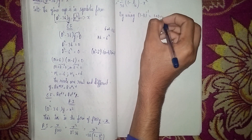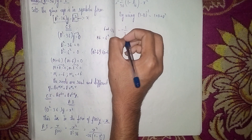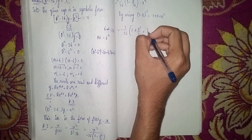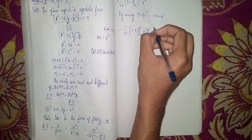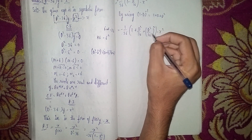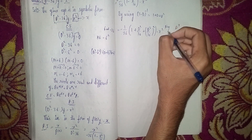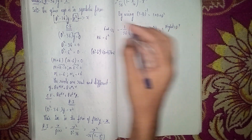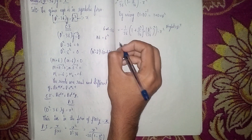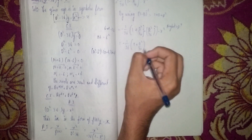We take the expansion up to D² only, since the RHS is x² (degree 2). Higher powers like D⁴ are neglected. So PI = -1/36 · (1 + D²/36) · x². Now multiply out: 1·x² = x², and D²(x²) means differentiating x² twice. d/dx(x²) = 2x, then d/dx(2x) = 2. So D²(x²) = 2.